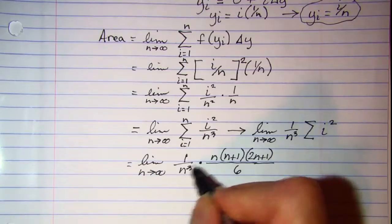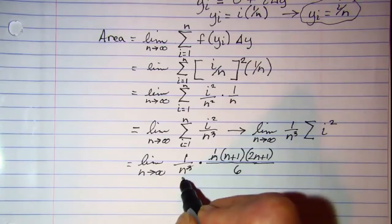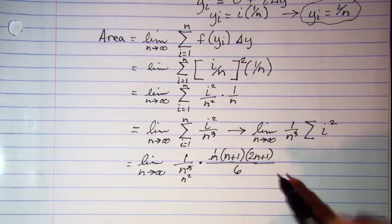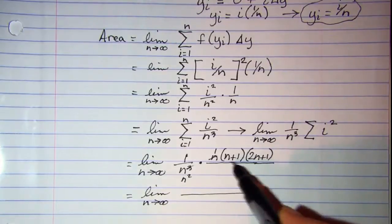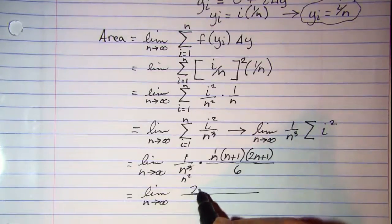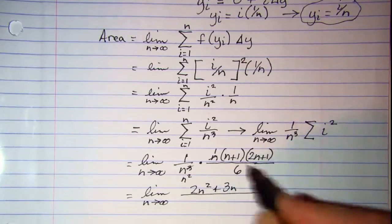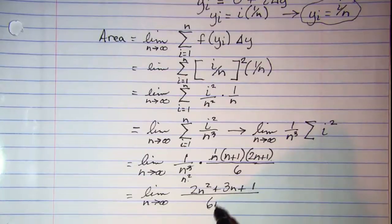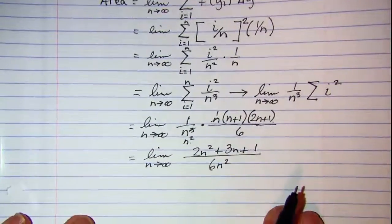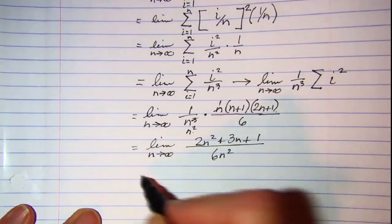Now I can simplify a little bit here. This will be a 1 and this will be an n squared. So I'm finding the limit as n approaches infinity of 2n squared plus 3n plus 1, and then my denominator is 6n squared.